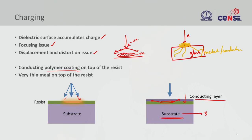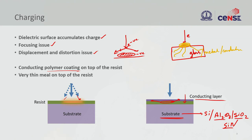If you use a silicon substrate, you will not find this charging problem as much. But once you go to substrates like sapphire, or where silicon dioxide is the top layer — even on a silicon substrate — or silicon nitride, you will have this charging issue, while silicon itself may not.